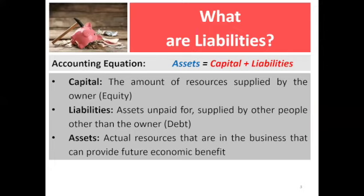We can start by appreciating what liabilities are. From the accounting equation, assets are always equal to capital and liabilities. We contract liabilities to enable us to secure assets. Capital is the amount of resources supplied by the owner, what we call equity. Liabilities are the assets not paid for, supplied by other people other than the owner — what we call debt. Assets are the actual resources in the business that can provide future economic benefits.